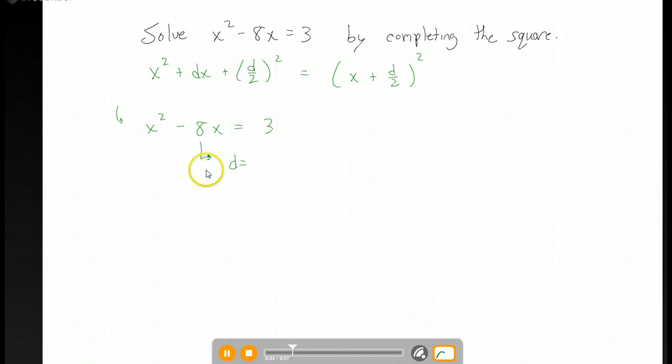So for this example, our number in front of x, our coefficient of x is negative 8. We're going to take that coefficient, divide it by 2. All right. And that's going to give us negative 4. So that's the number. We're going to take this number, square it, add it to each side of our equation.